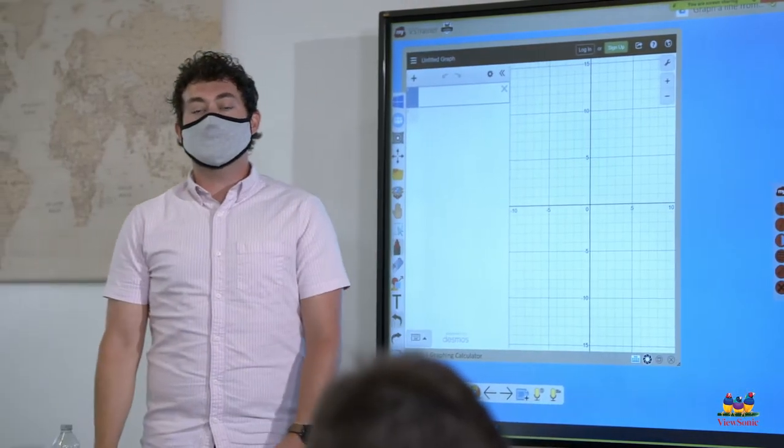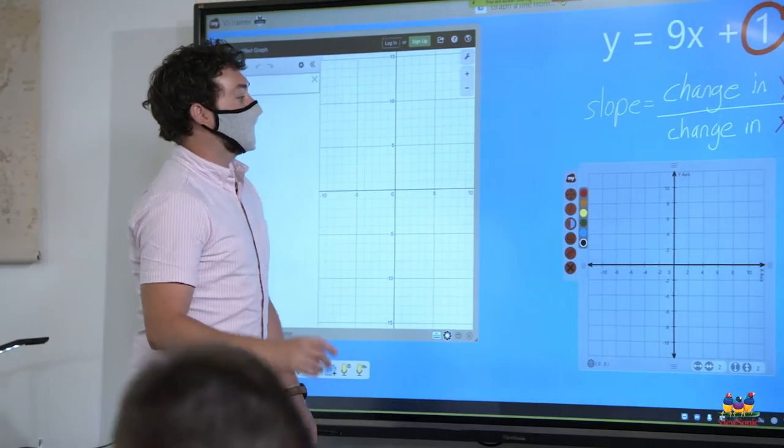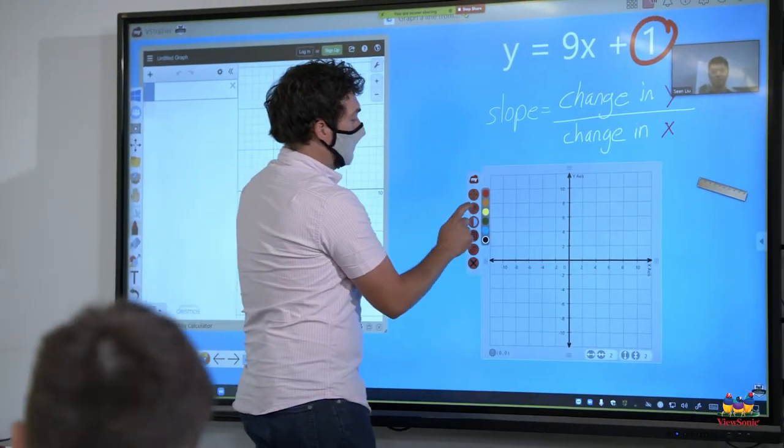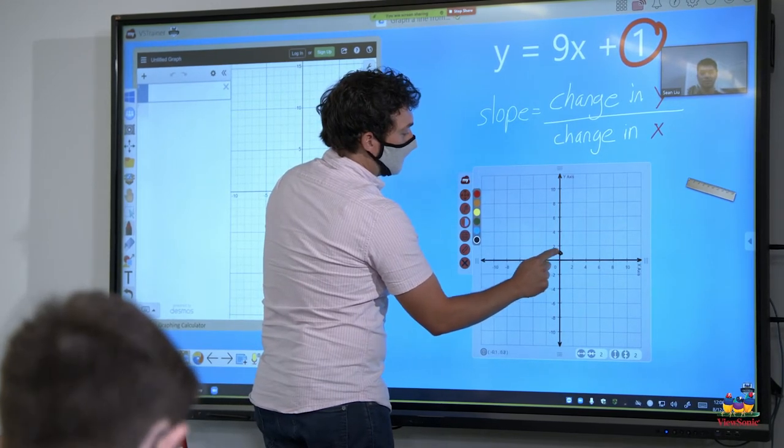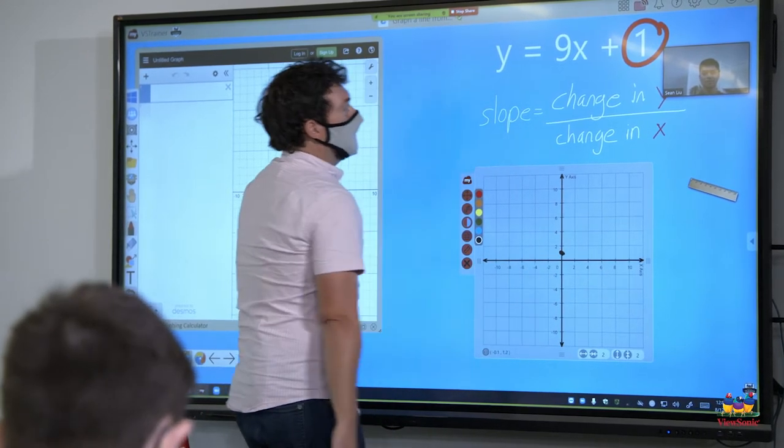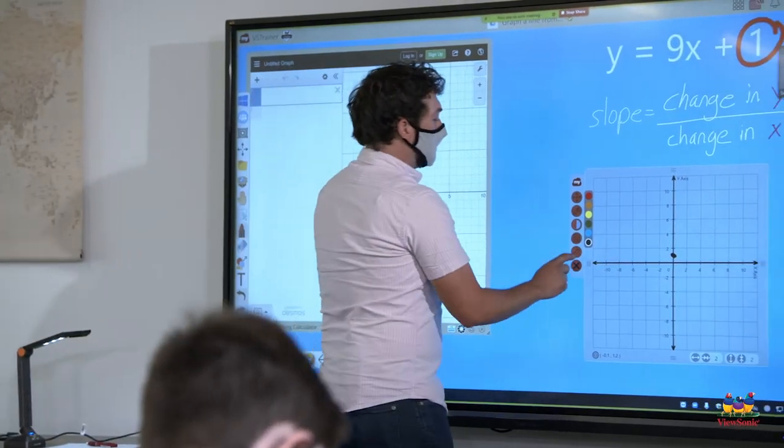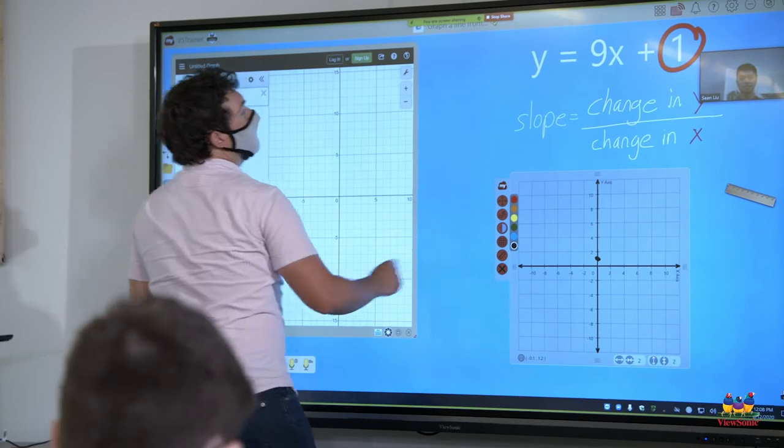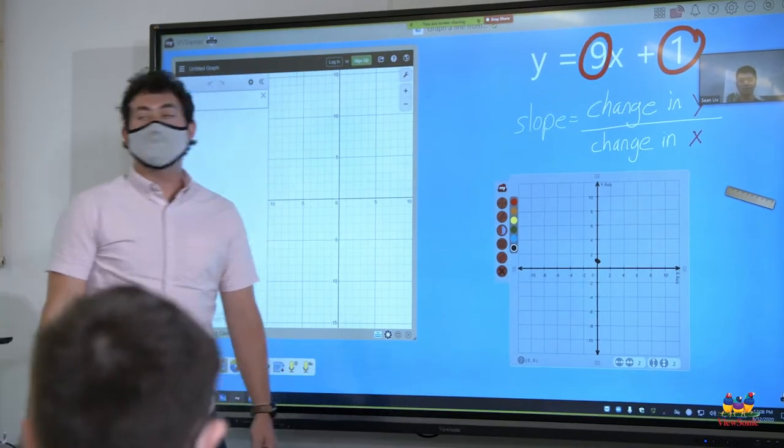b is the y-intercept. That's where we graph first. Alright, so we would find the 1 here on the y-intercept and we would mark it. So we'll put a little mark here. Next, we have to find the slope. So the slope is indicated by the m in the formula y equals mx plus b.